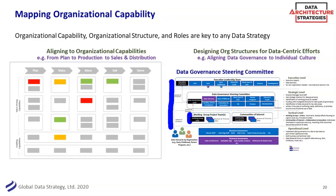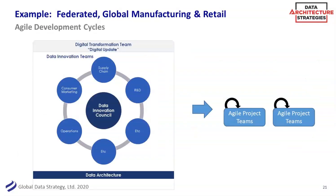How you show governance structures and whether they fit the culture is actually super critical. You want to get people psyched to come to these meetings, and they will. What you call it matters too — this particular committee was called the Data Innovation Council, and they had data innovation teams. Was governance a big part of that? Yes. But they were a very agile, forward-thinking company that didn't want to seem like they were just telling people what to do.